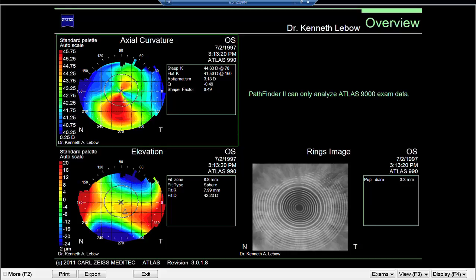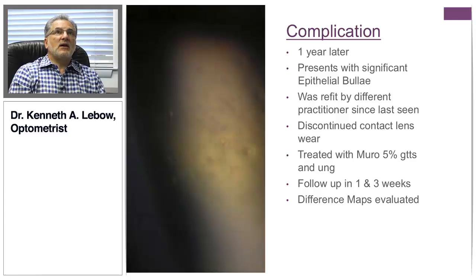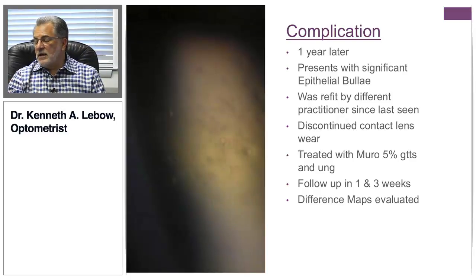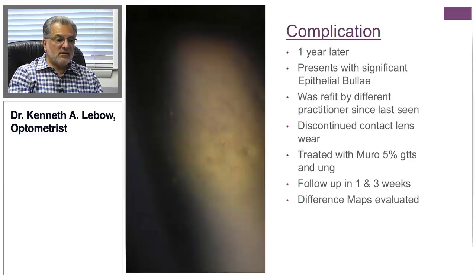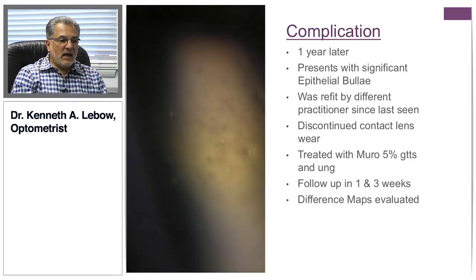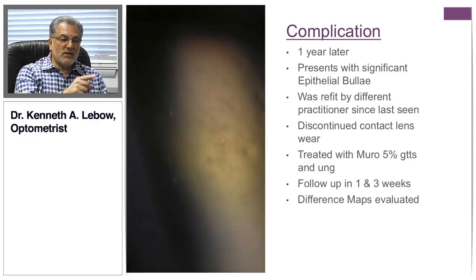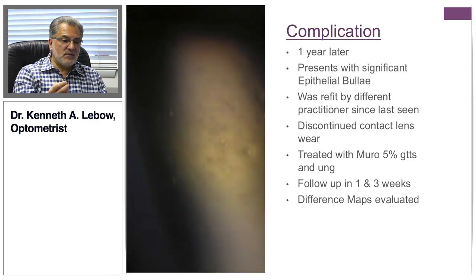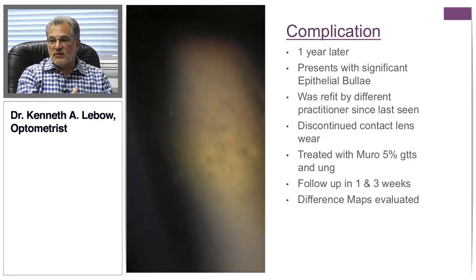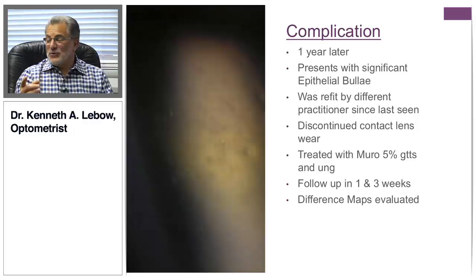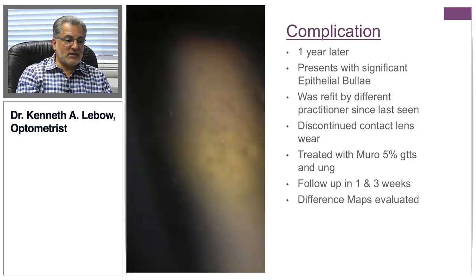A year goes by, the patient is refit by another practitioner, and when he presents back in my office he has significant epithelial bullae. The entire epithelium, as you see in the photograph on this slide, is bullous — it's swollen, it's edematous. The other practitioner had changed the fit, and for whatever reason his vision has fluctuated. That should be another clue that we may be dealing with a keratoconic situation.